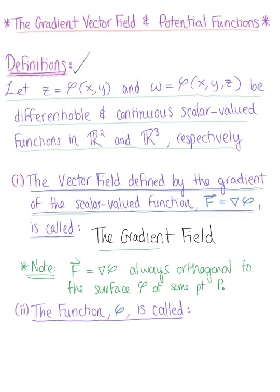The gradient field represented by the vector F⃗ being defined as the gradient of φ is always perpendicular to the surface at some point P₀. We could also say that it's orthogonal to the level curve.